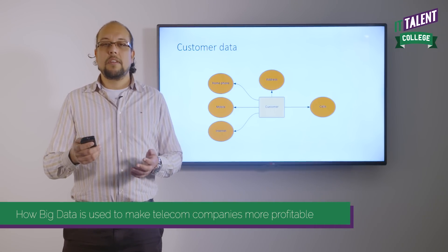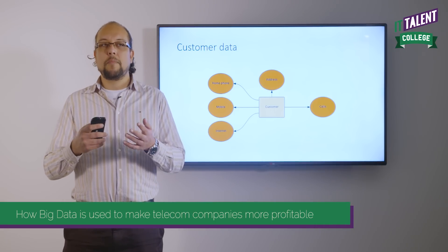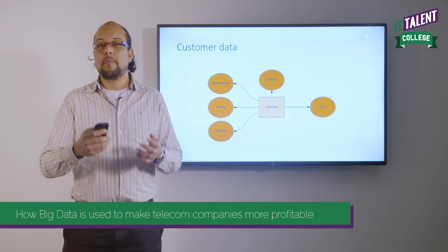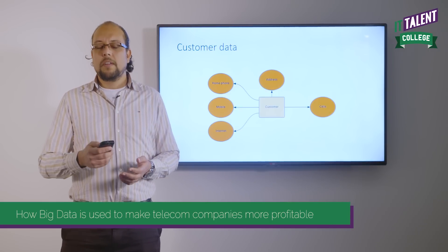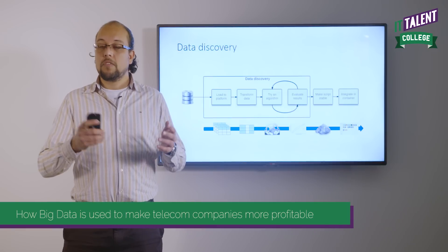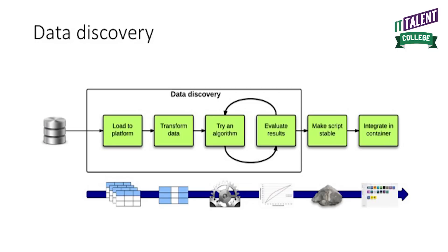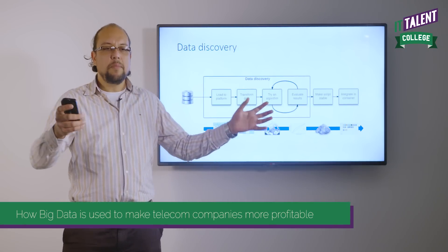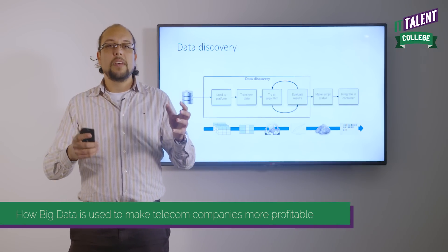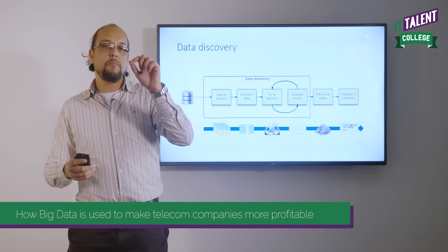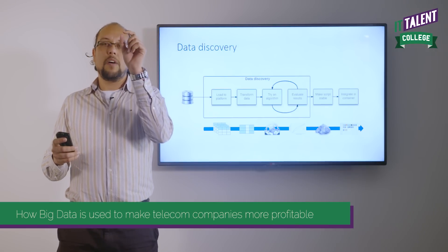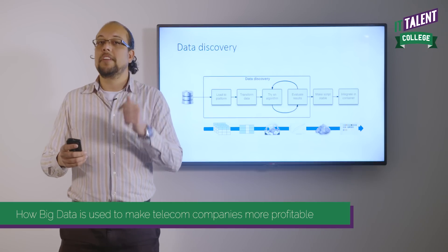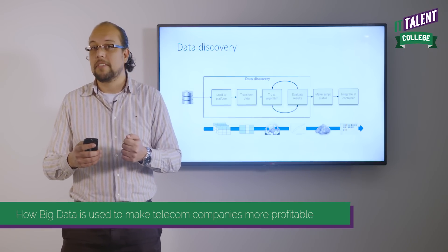Using this limited data, you try to predict whether a person might not call the call center, whether you can sell them a larger product, or prevent them from going to a competitor. You pull the data to a local platform — maybe a laptop or an analytic server — join completely separate tables into one big table with a row per customer, and a one or zero indicating whether the person churned or called the call center.